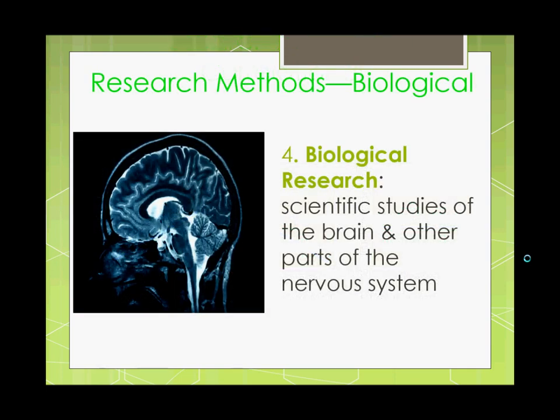The last research method I want to mention quickly is biological research. This is when we study the brain and other parts of the nervous system. This can have any number of applications to research, whether it's for studying medication, genetics, hereditary issues like diseases, or other human factors like male pattern baldness. When we're looking simply at the biology of people, we're not necessarily studying their thoughts or feelings or changes in behavior. It's more that as we affect different parts of our internal working structure, do we have other changes in our internal working structure as well.